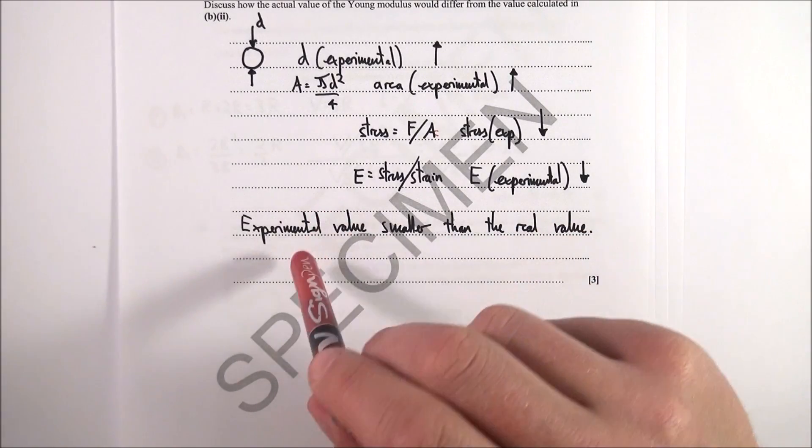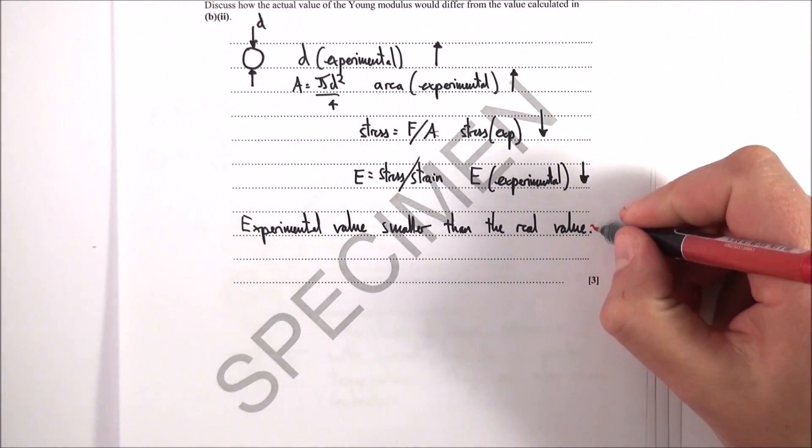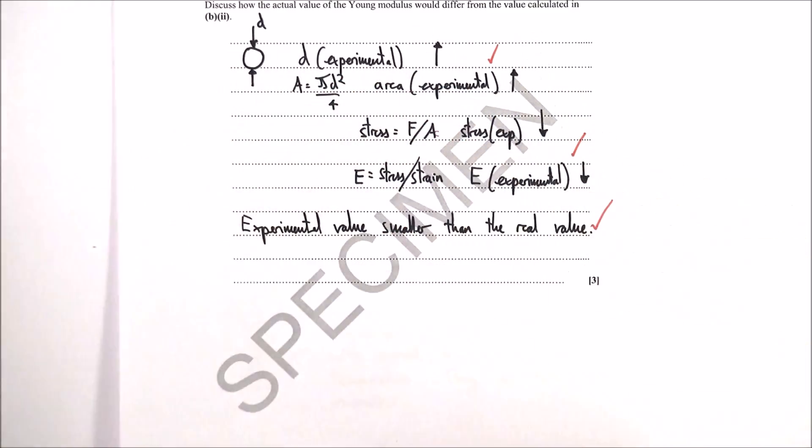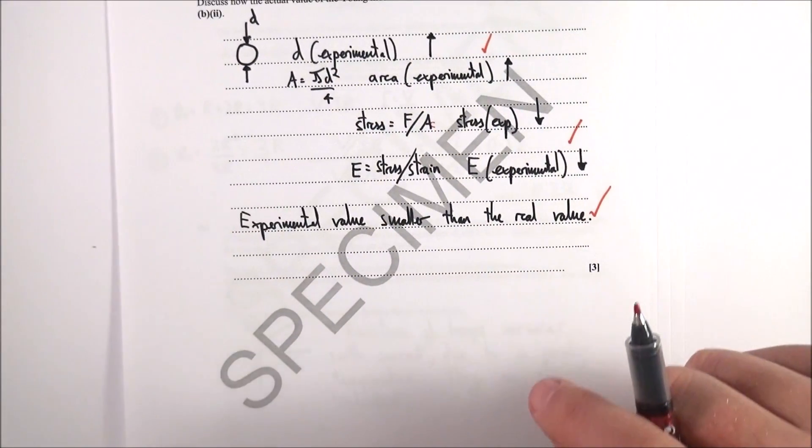The person here - their experimental value was smaller than the real value. So basically, you get one mark for stating that and maybe a couple of marks for having a logical argument of what's happening to the readings as we go through. That's question 23, thank you.